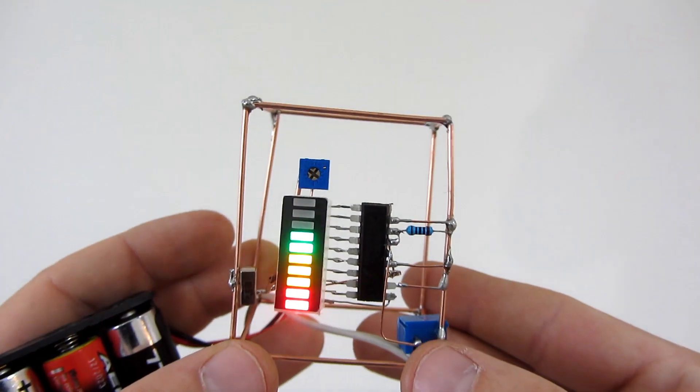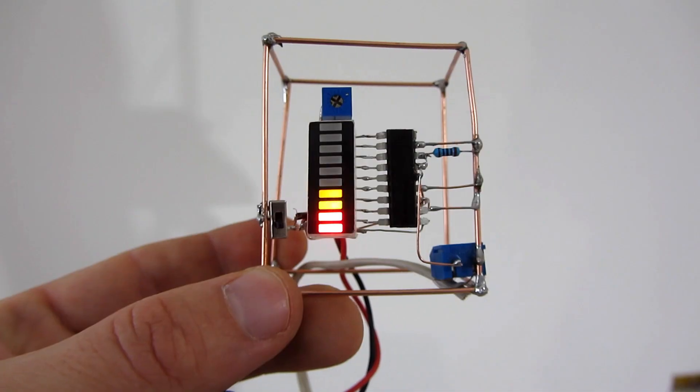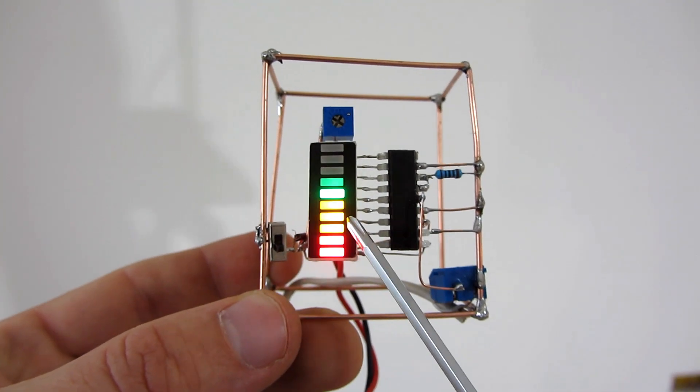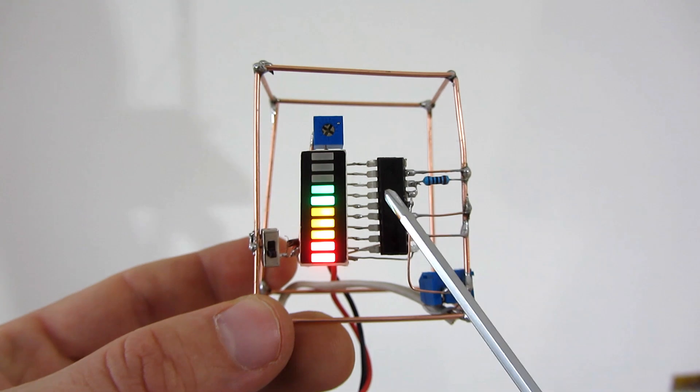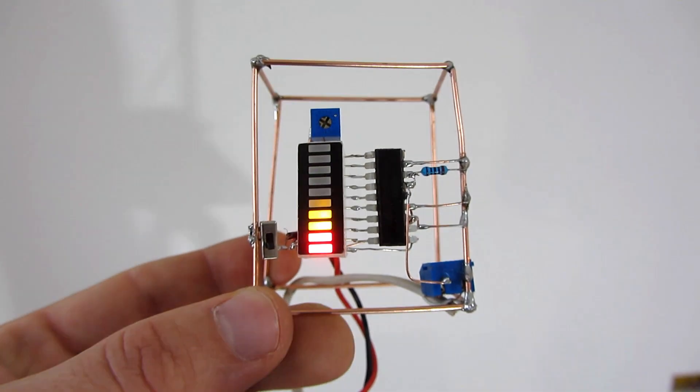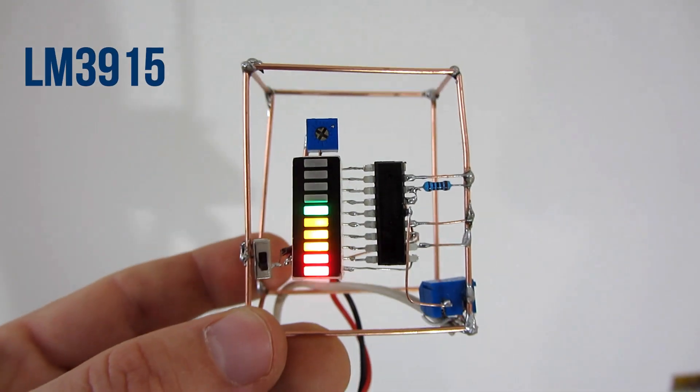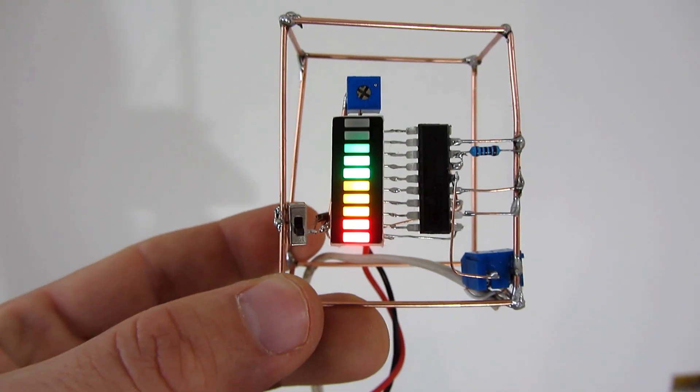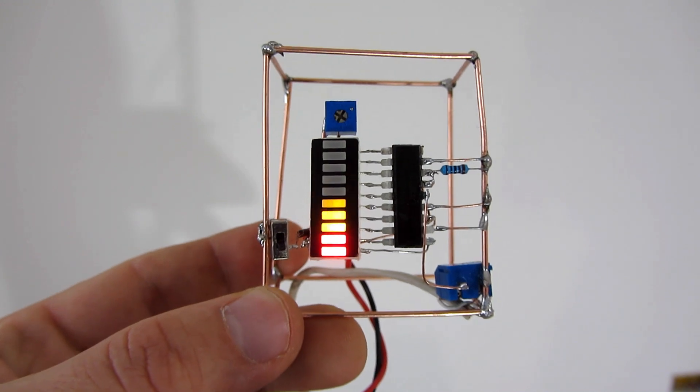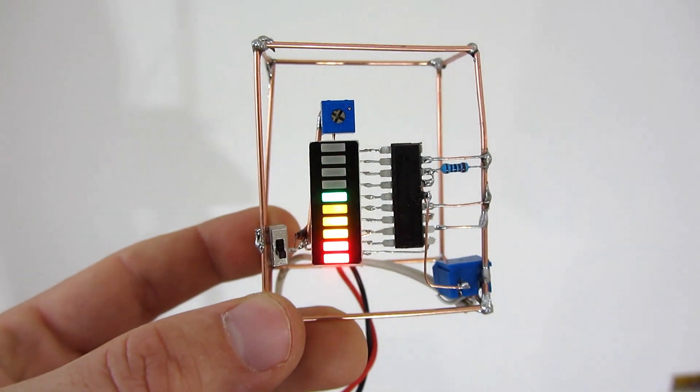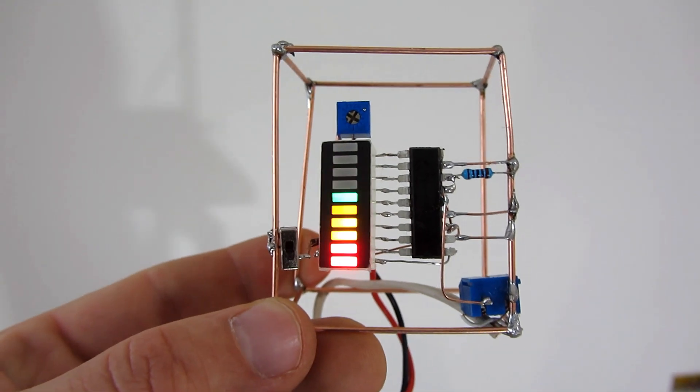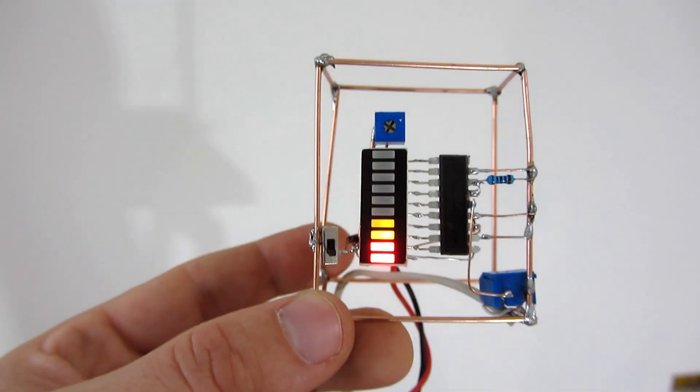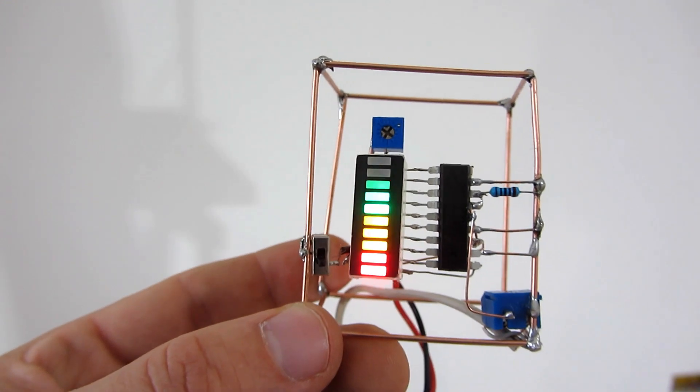I used this LED bar graph which contains 10 LEDs. The IC is LM3915. I also use this potentiometer to adjust LED brightness. The circuit is very simple. This is a minimal configuration with only one resistor. LM3915 can work from 3 volts up to 20 volts.